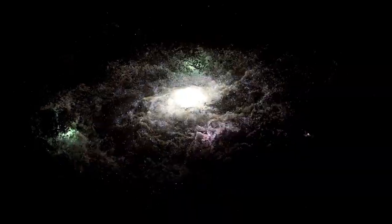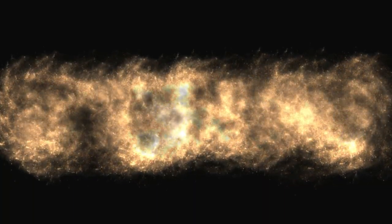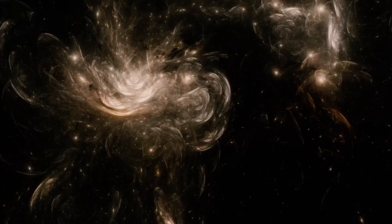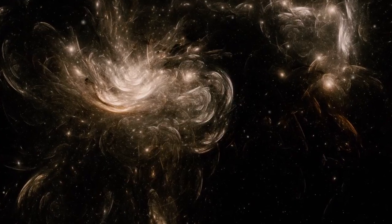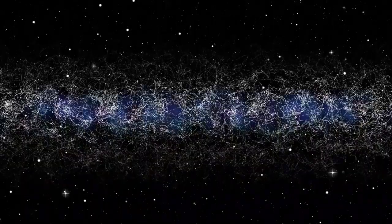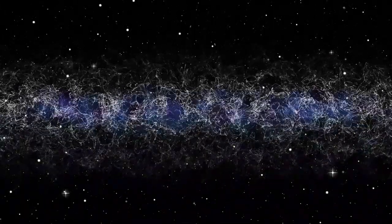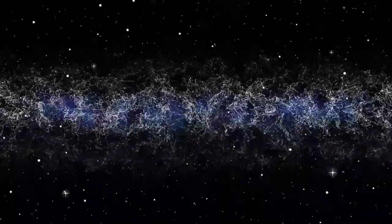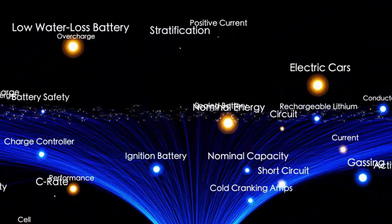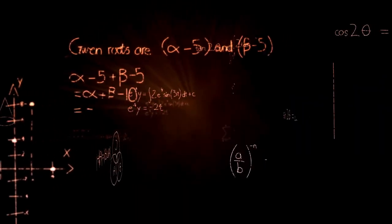However, dark flow remains a controversial topic. Some studies have supported its existence and suggested that a massive object or structure could be causing it. Other studies have not been able to confirm the phenomenon. Some researchers think that the data might be flawed, or that the motion of the galaxies could be due to other reasons, such as measurement errors or natural variations. As of now, the scientific community has not reached an agreement on whether dark flow is real. More research and better data are needed to understand this mysterious effect. If dark flow does exist, it could point to something very large and unknown lying beyond the observable universe, something that is pulling on galaxies and affecting their movement.